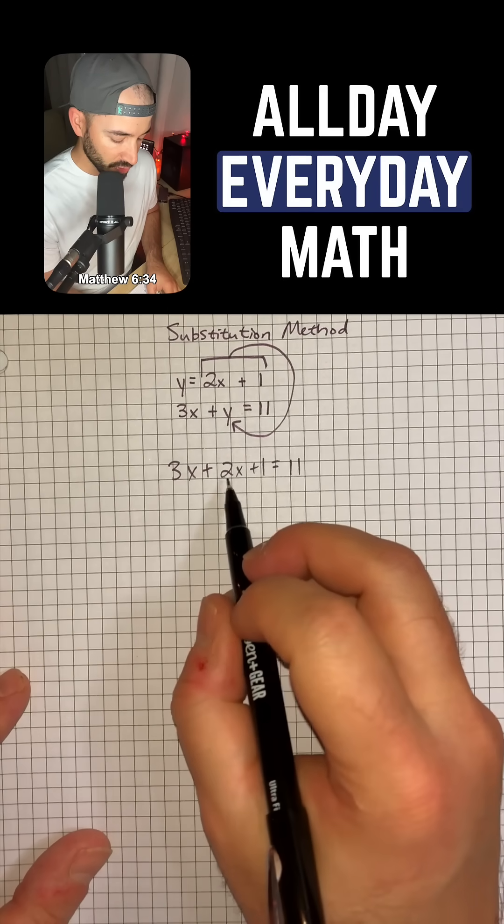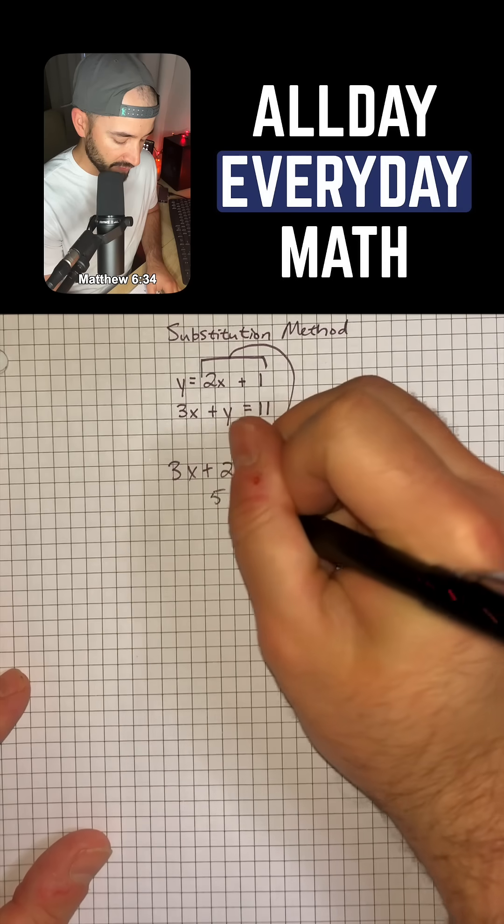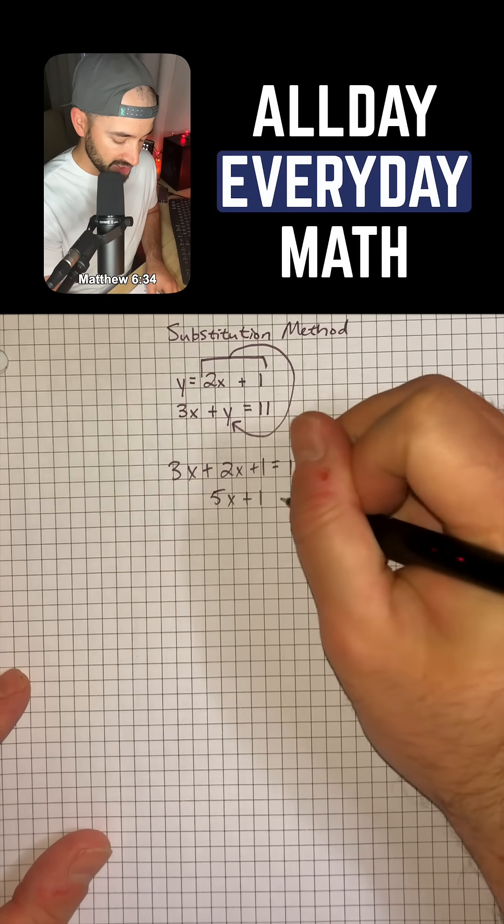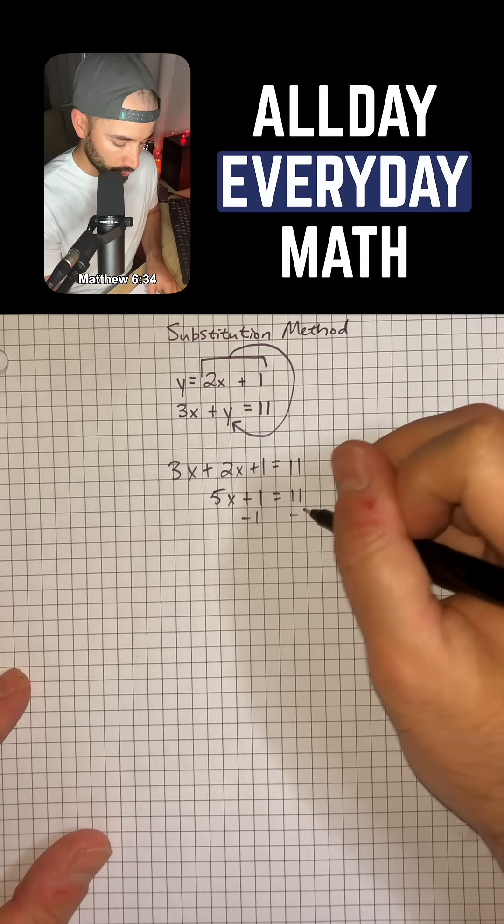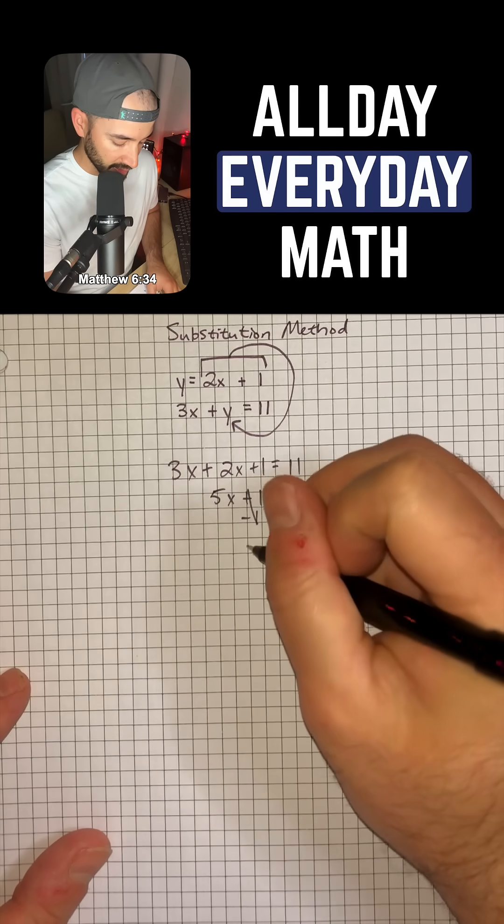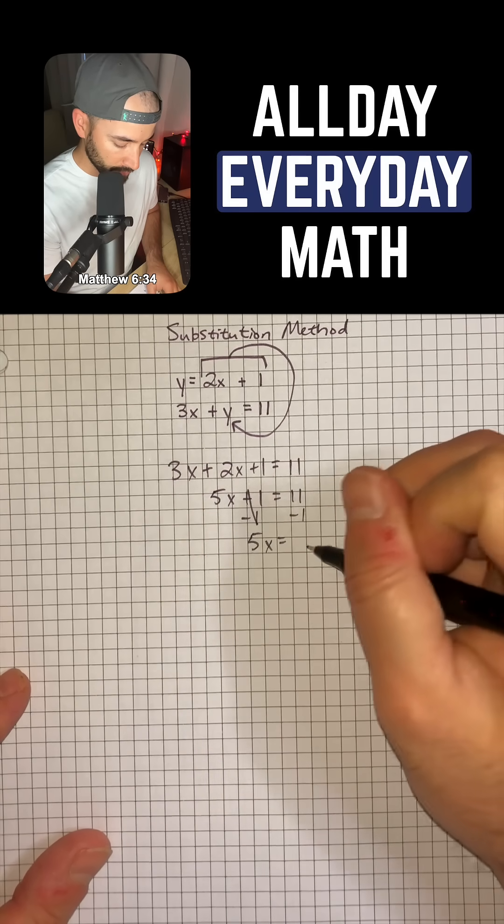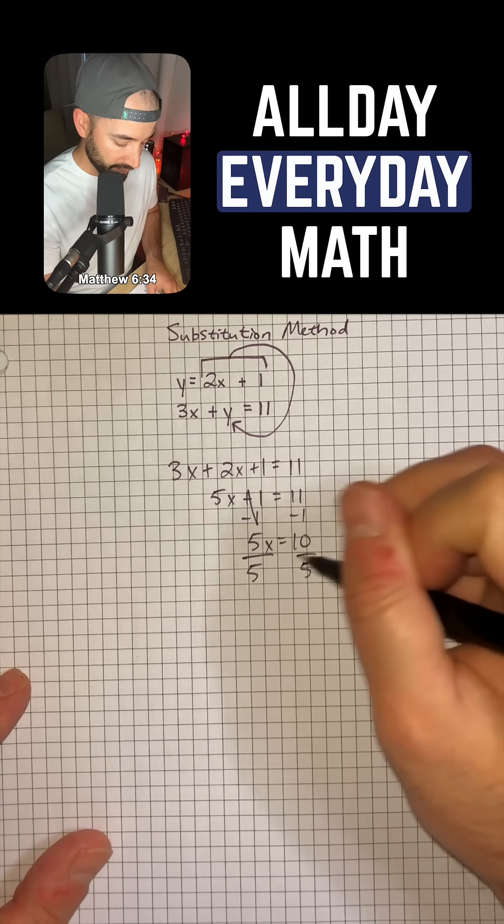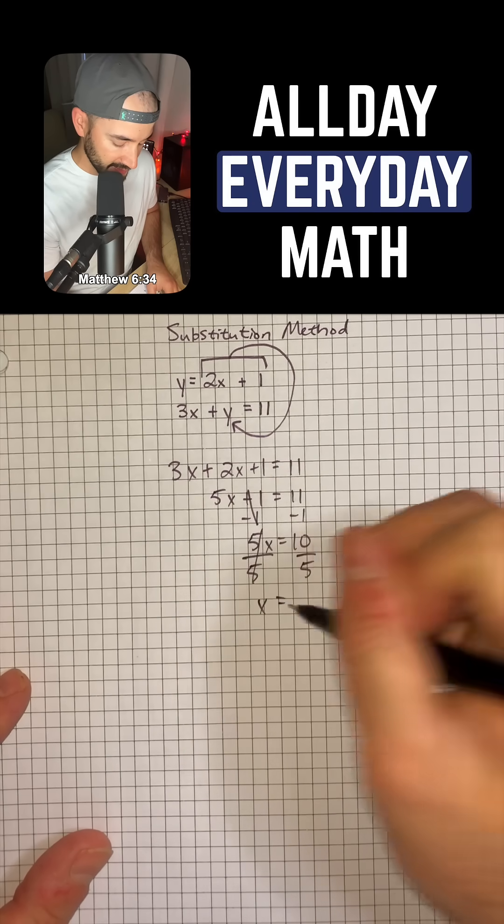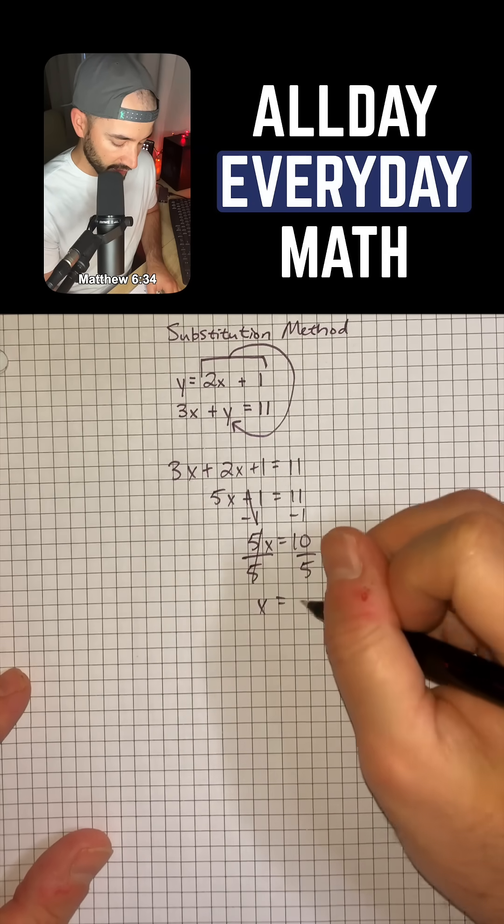So 3x and 2x can combine to make 5x, and then we still have plus 1 equals 11. Then we can subtract 1 from both sides to leave us with 5x is equal to 10. And now we can divide both sides by 5 to get x is equal to 10 divided by 5, which is 2.